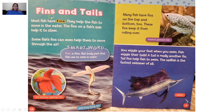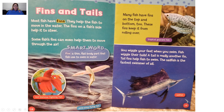Fins and tails. Most fish have fins — they help the fish to move in the water. The fins on a fish's side help it to steer. Some fish's fins can even help them to move through the air. Our smart word here is 'fins' — it's in bold, which means it stands out and is noticeable. A fin is a thin flat body part that fish use to swim in water. Here's a red Siamese fighting fish, kind of like a beta fish, and this is a pink wing flying fish — look, it does have wings!